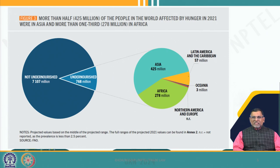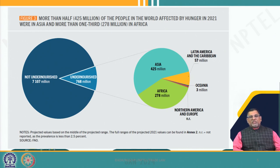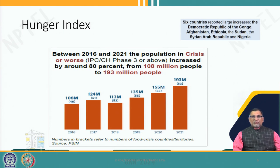The US and European Union are completely devoid of this particular problem of hunger or undernourishment. So who is affected? Asia and Africa are affected. Most of these countries are agriculture-driven economies, and a large number of the population needs to be fed by these particular countries. If you look into the hunger index, there is a large increase in certain countries.